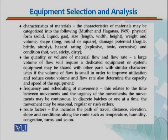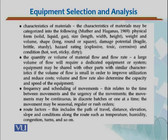We can also have discrete batches, where the product or material moves in discrete numbers rather than continuously. Most of the time, if the product is in liquid form it will have continuous movement, whereas if the product is discrete in nature it moves in numbers — for example, in a garment manufacturing firm or an automobile industry, the product would move in discrete batches. The movement may also be seasonal, regular, or in rush orders.